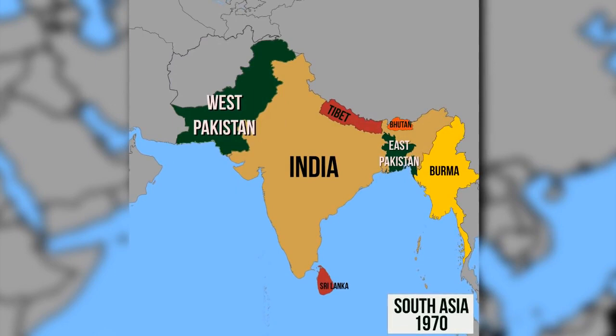This inequality made the Bengalis of East Pakistan wish for self-determination, which showed in the 1970 Pakistani general election. The Awami League, led by Sheikh Mujib al-Rahman, demanded greater autonomy for East Pakistan.